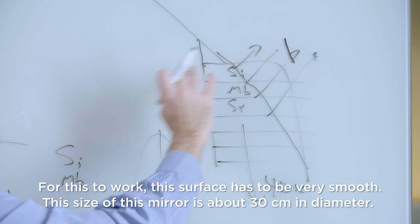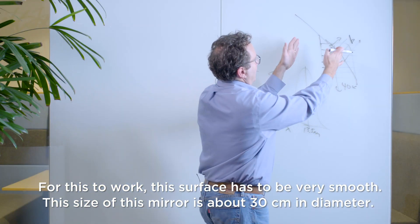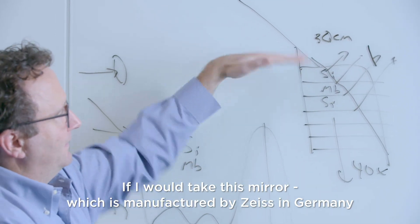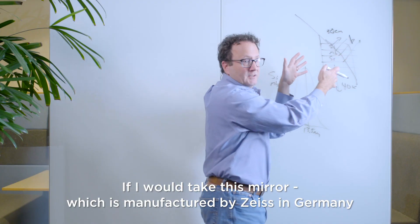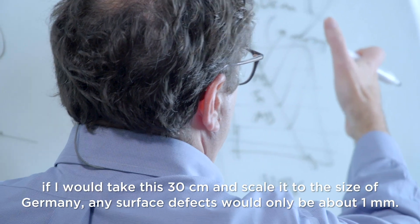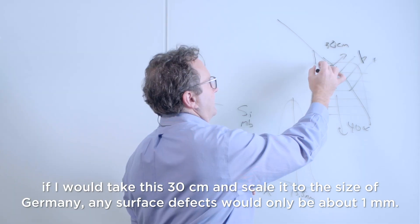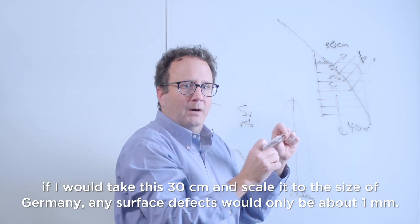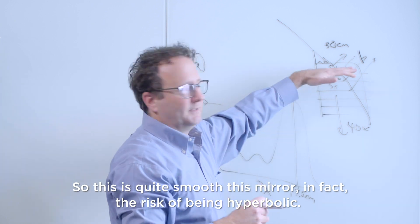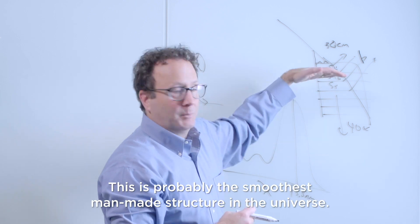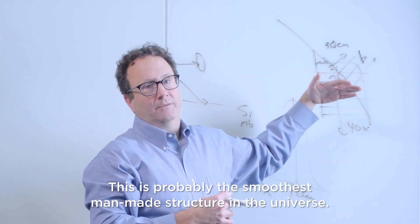For this to work, this surface has to be very smooth. The size of this mirror is about 30 centimeters in diameter. If I were to take this mirror, which is manufactured by Zeiss in Germany, scale it to the size of Germany, any surface defects would only be about one millimeter. So this is quite smooth, this mirror. In fact, at risk of being hyperbolic, this is probably the smoothest man-made structure in the universe.